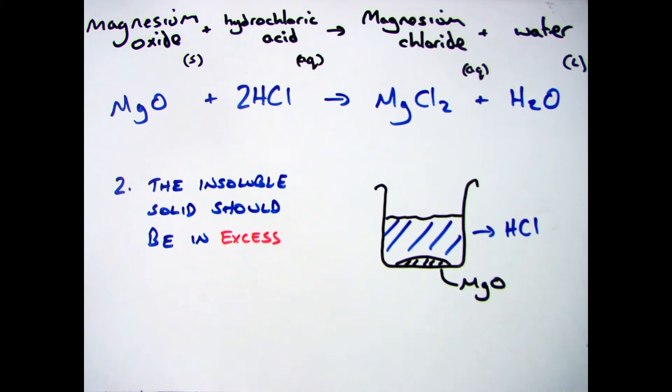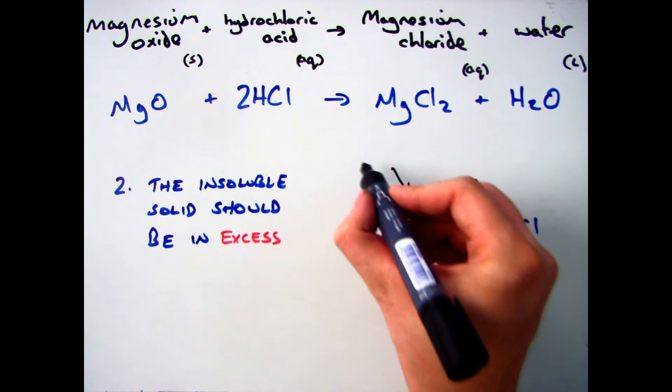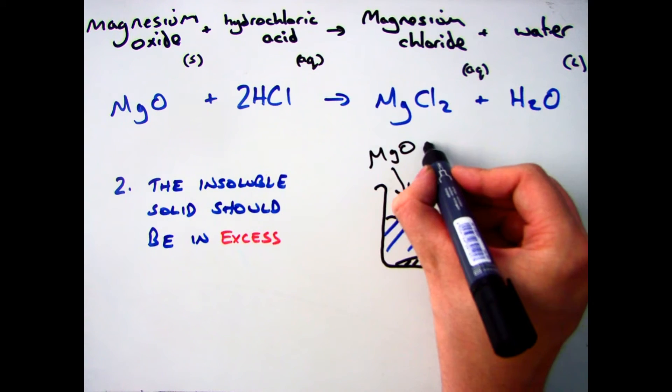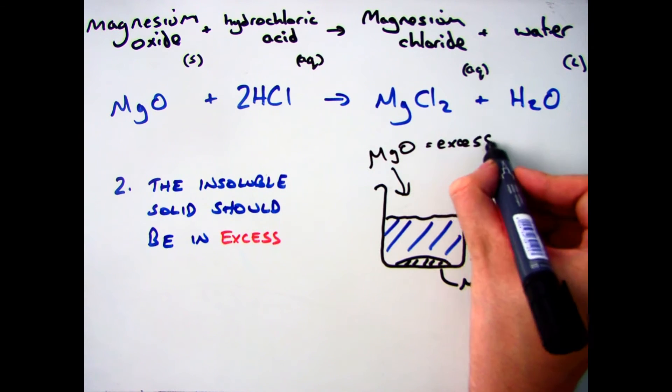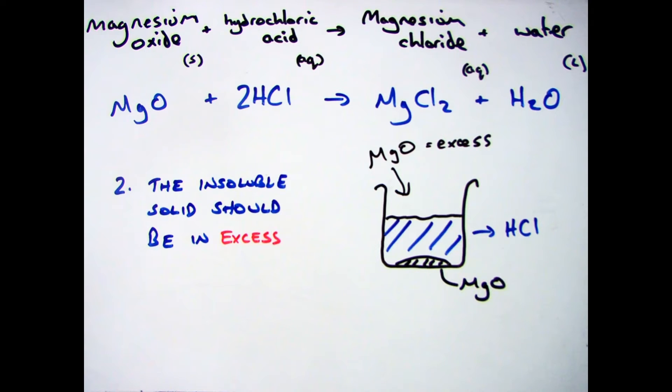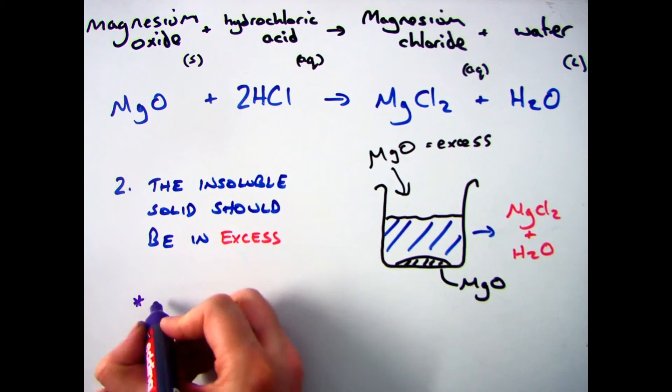Now what you must do is add the insoluble solid in excess. So magnesium oxide, you need to add more and more of it until no more dissolves. When that happens, you'll no longer have hydrochloric acid in the solution. You'll be left with your salt, which is magnesium chloride, and your water, H₂O.